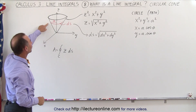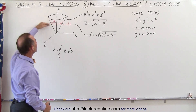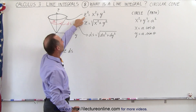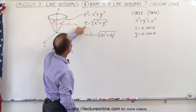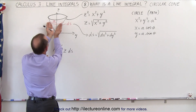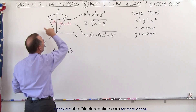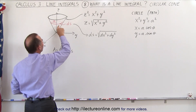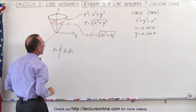The equation of the surface of the cone can be defined as z, which is the height above the xy plane. z squared is equal to x squared plus y squared, or z equals the square root of x squared plus y squared. That defines the surface of this cone. We're going to integrate all around the cone at a horizontal path, and the radius of the path will be equal to a.